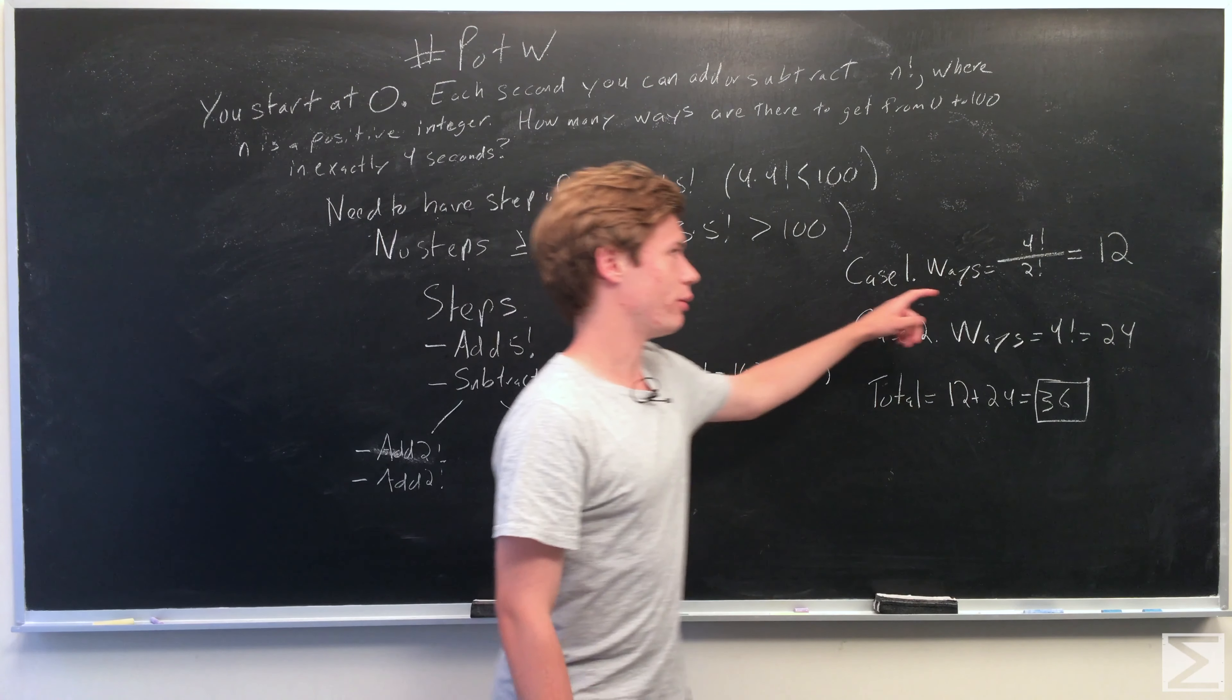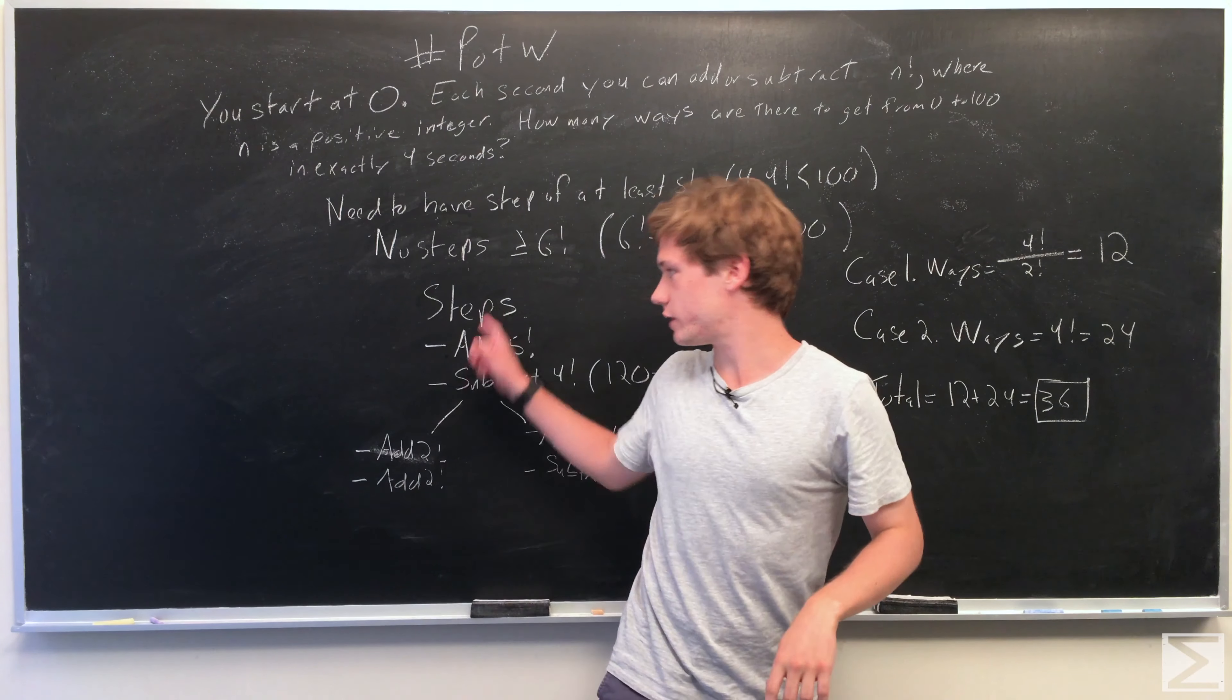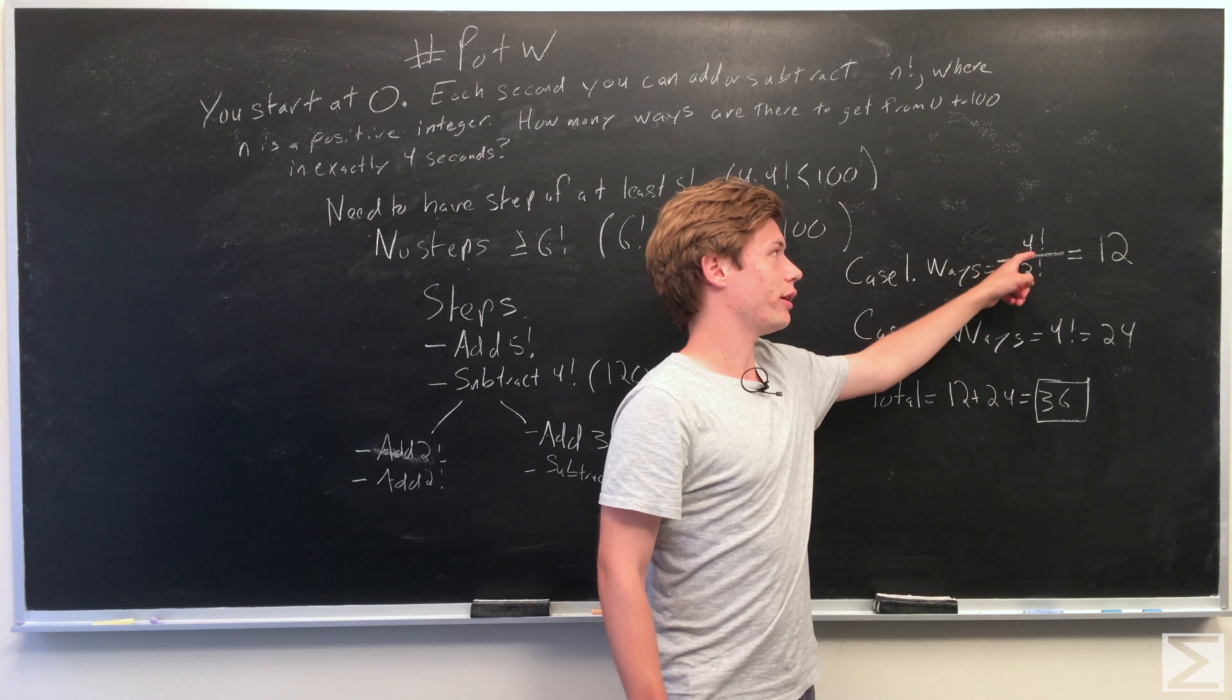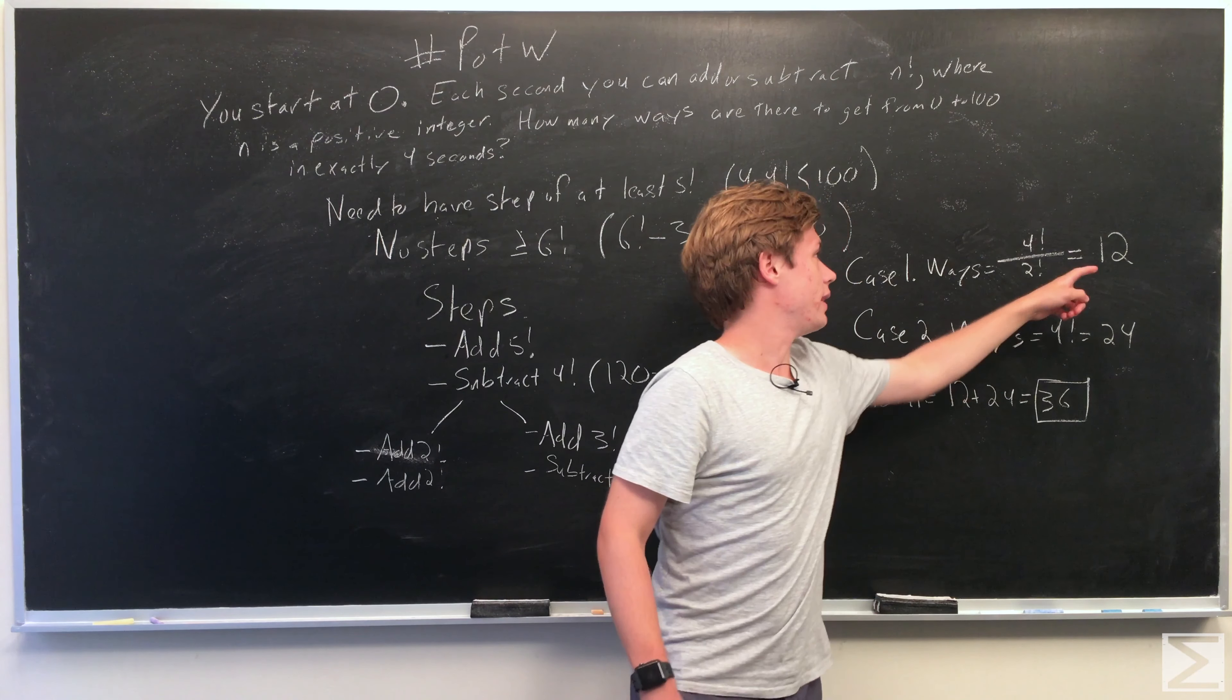So for case 1, the number of ways to get from 0 to 100 in 4 seconds using these steps equals 4 factorial over 2 factorial, accounting for these last two steps, and that equals 12.